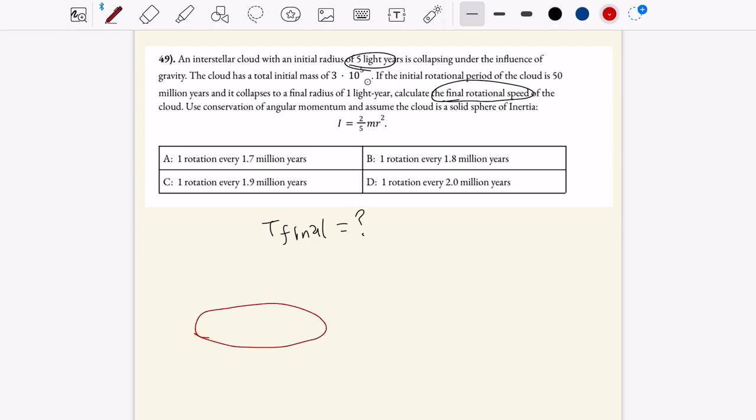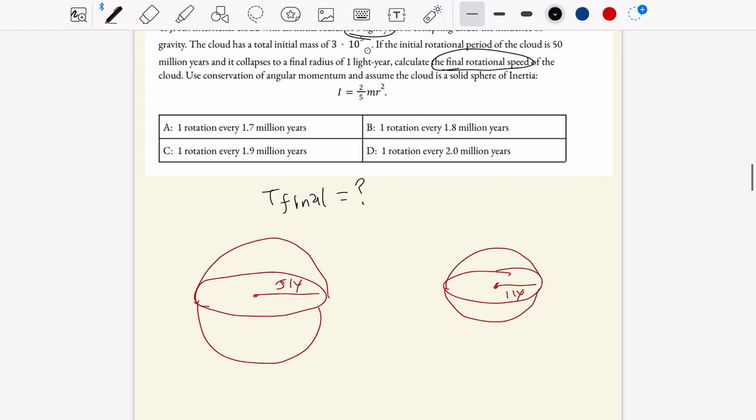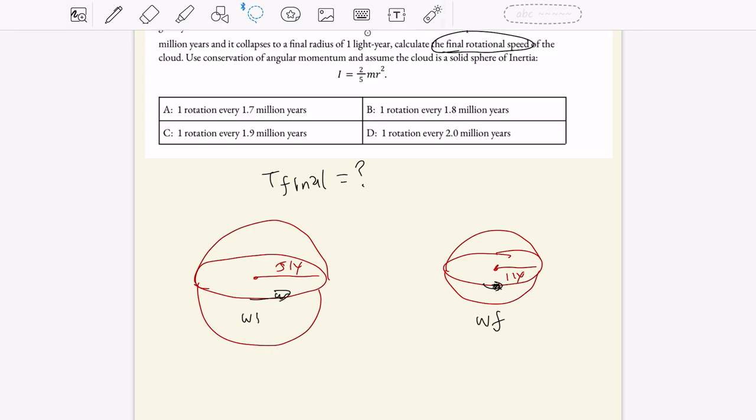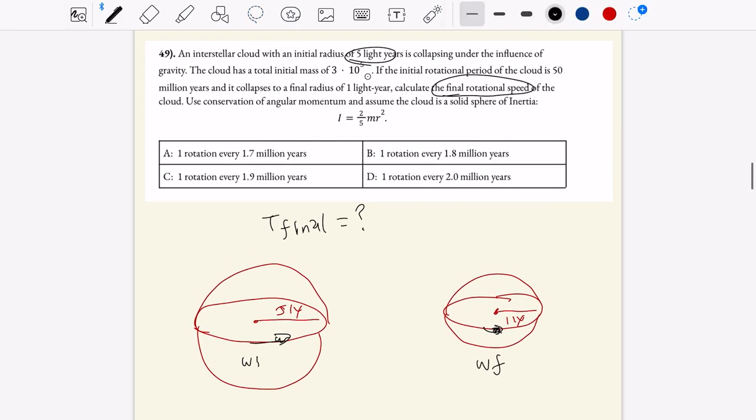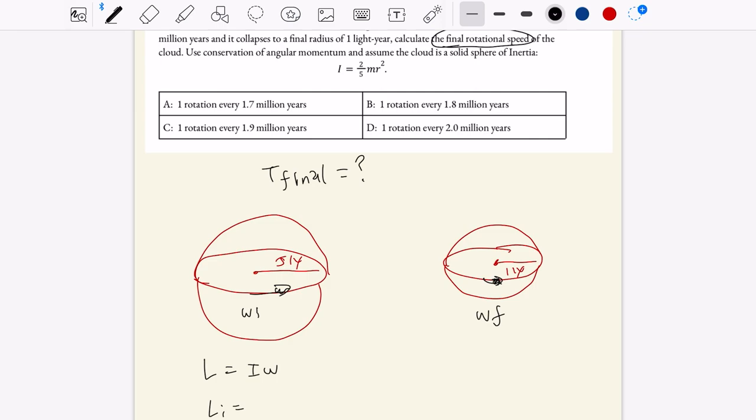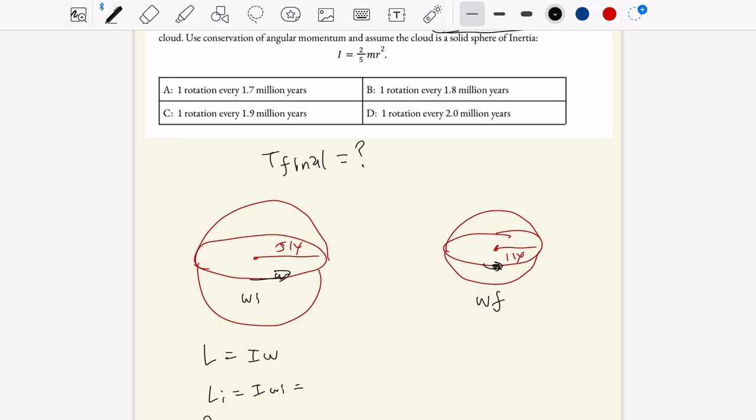The question gives you a hint that you need to use conservation of angular momentum and assume the cloud is a solid sphere of inertia given by this formula. Let's go ahead and consider this problem. So let's draw a quick picture. First off, we have radius five light years, and it's a spherical cloud, shaped like this, and this is all just going to be an interstellar cloud. And then it goes down to a much smaller radius of one light year. Obviously, this isn't to scale.